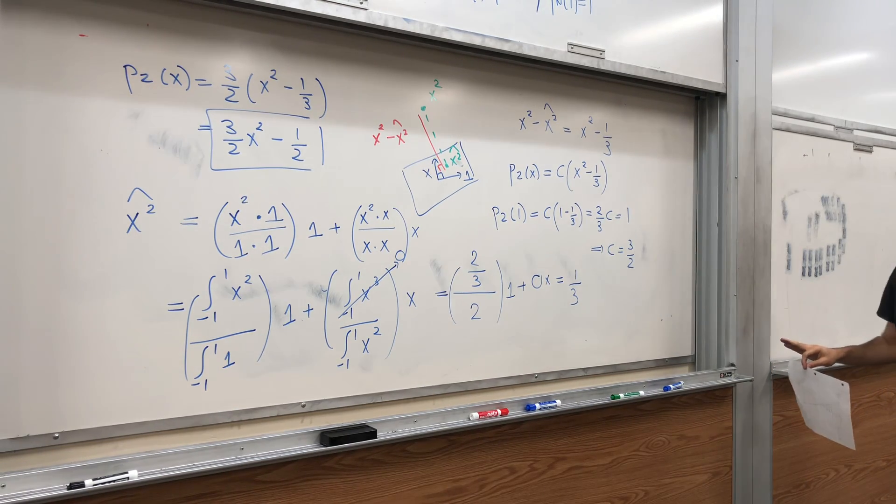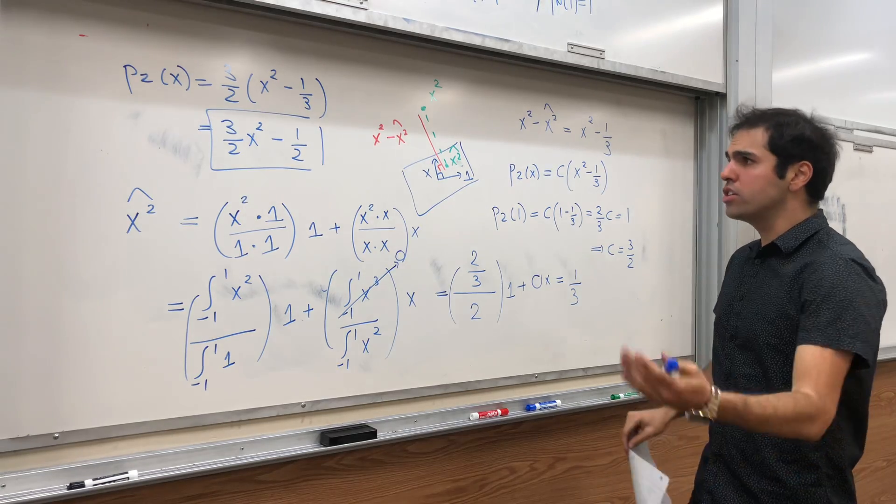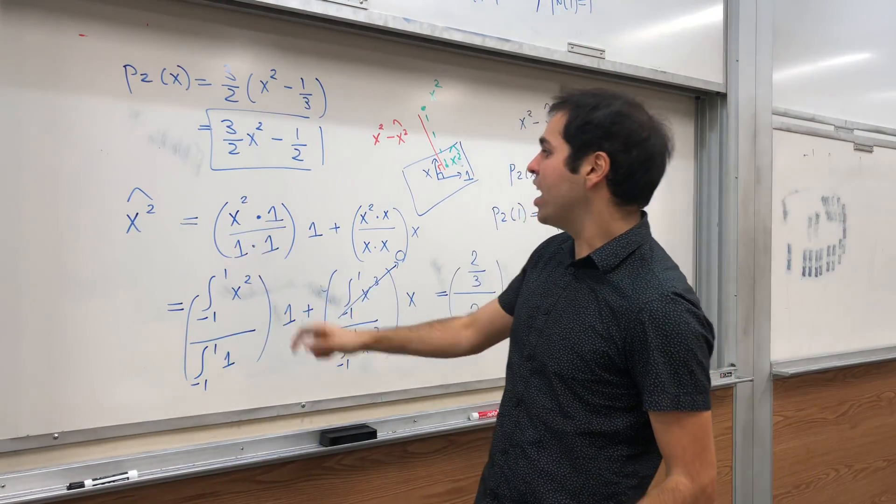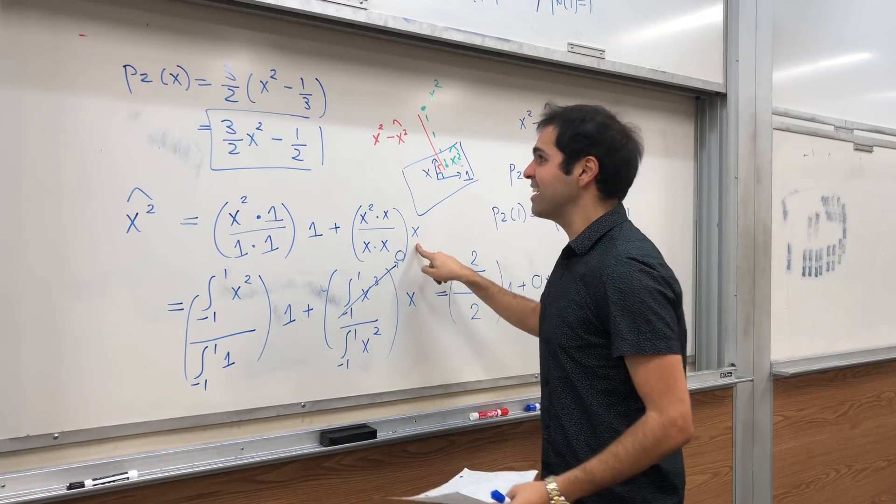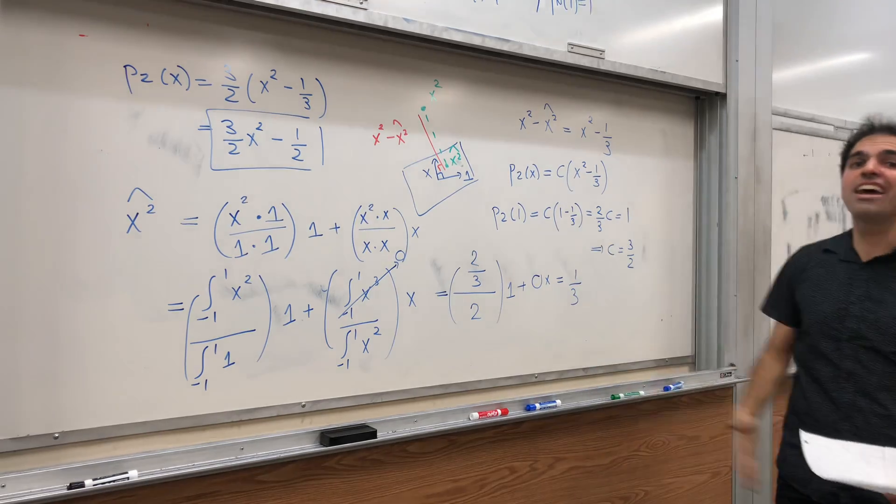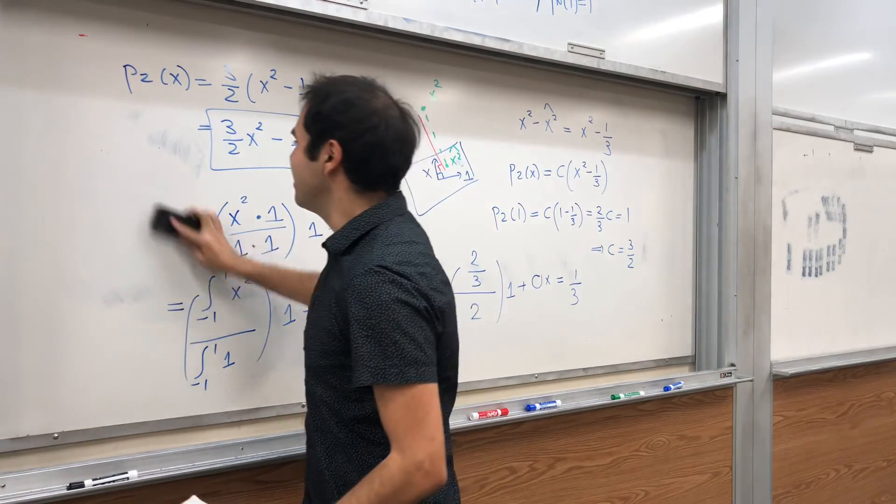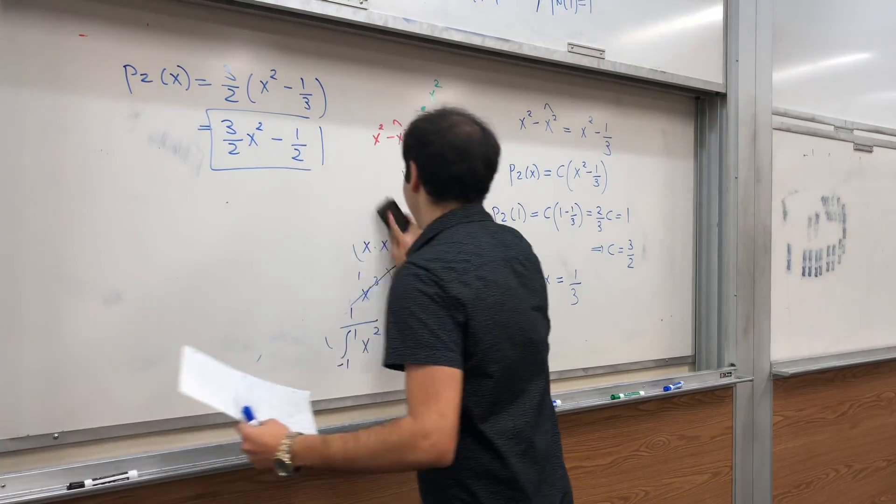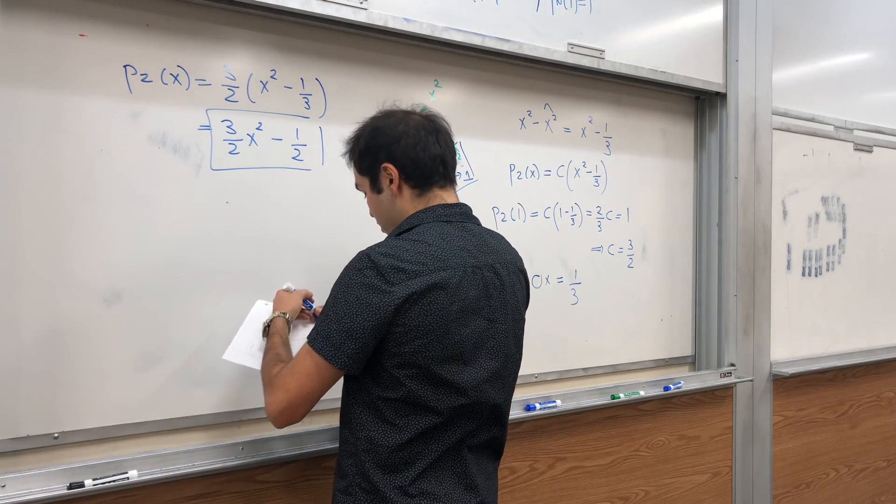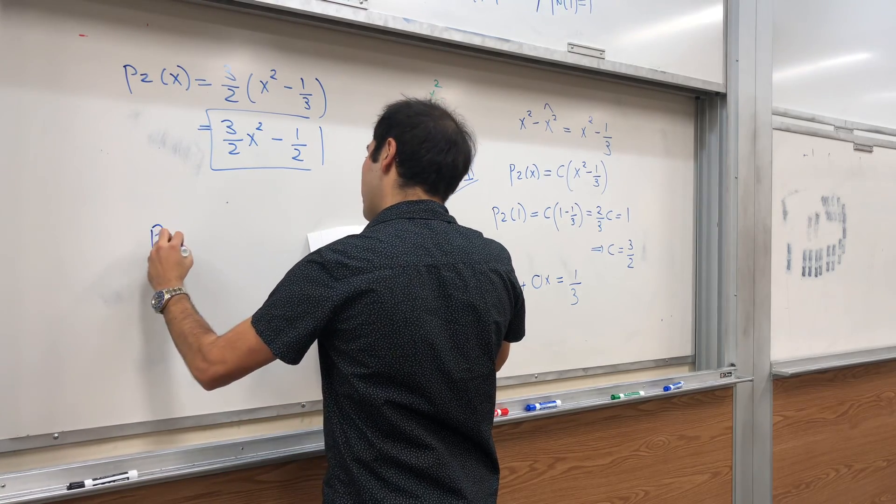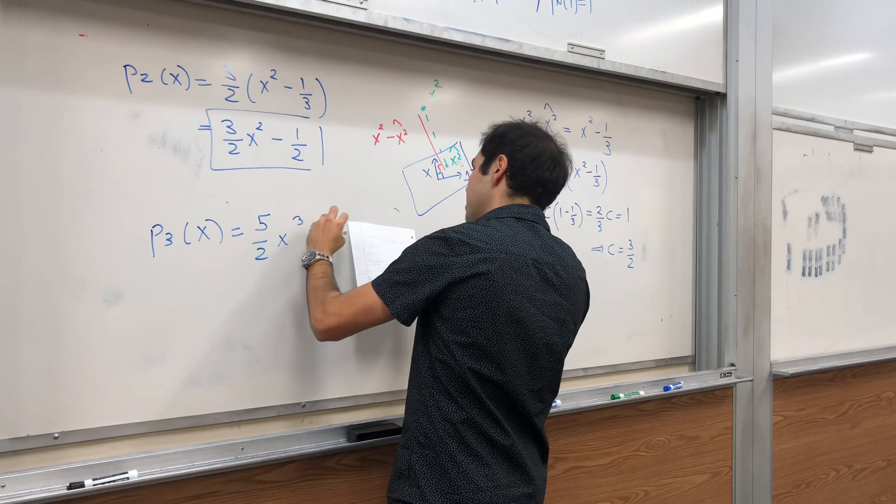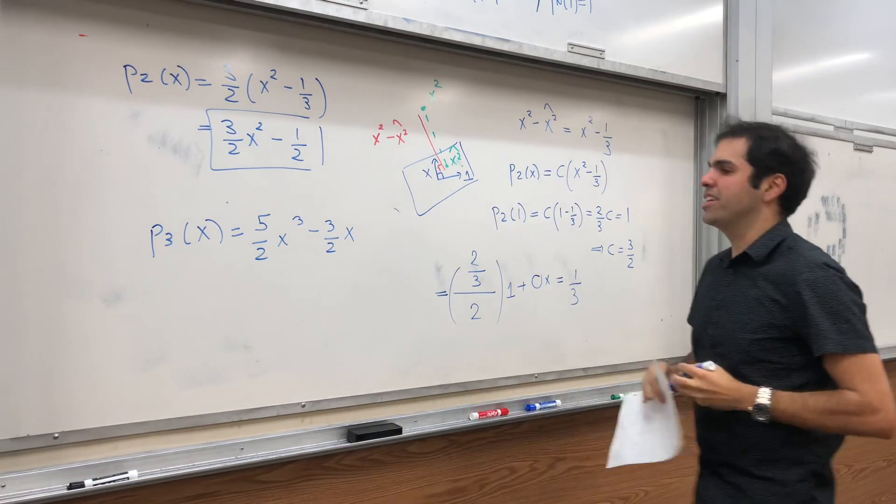And then, to find all the other polynomials, you just continue. So then you do x cubed hat, and you dot it with 1, with x, and careful, not x squared, but with this vector. And it kind of becomes a nightmare after this point. So I think this is a good time to stop. But if you calculate this, I believe you should get something like that. I read this on a table somewhere, you get 5 halves x cubed minus 3 halves x, et cetera.